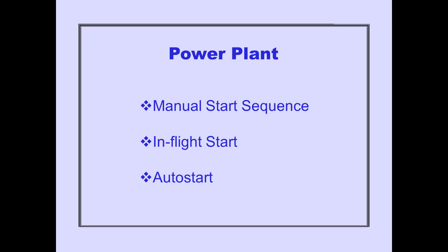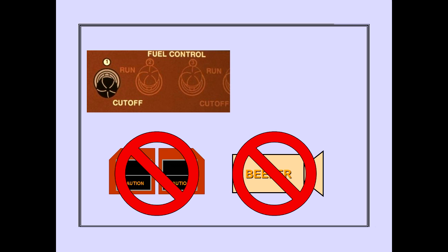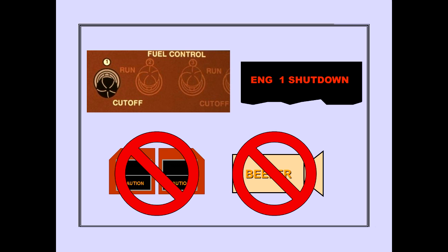First, let's look at start indications displayed on ICAS when the engines are not running. The ICAS caution message Engine Shutdown is displayed when the fuel control switch is in cutoff.